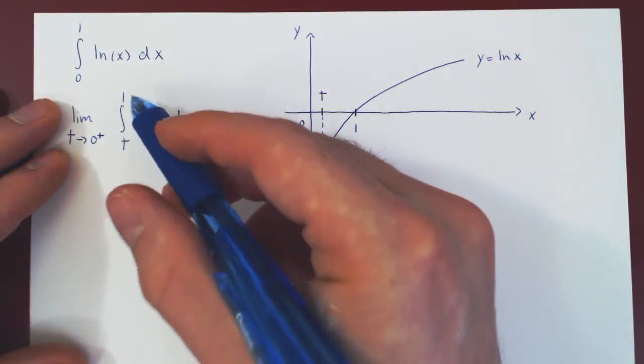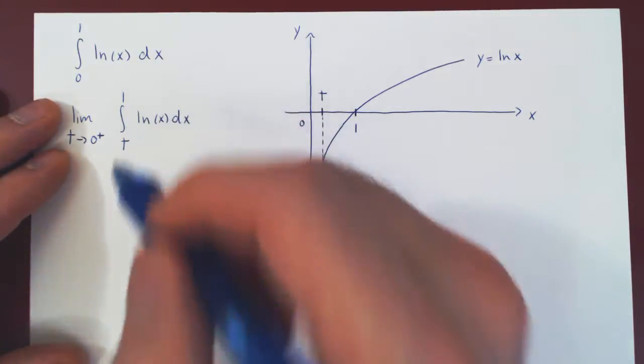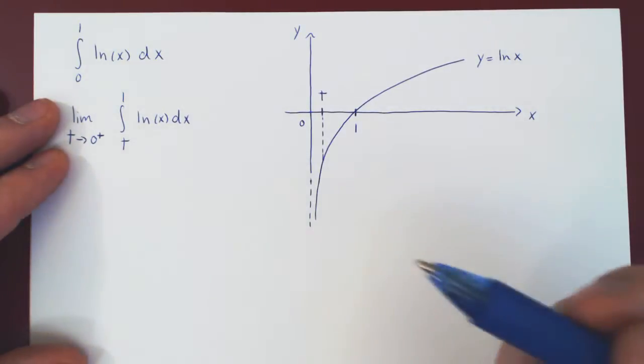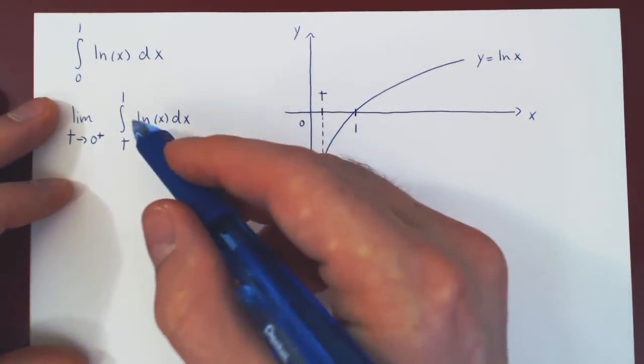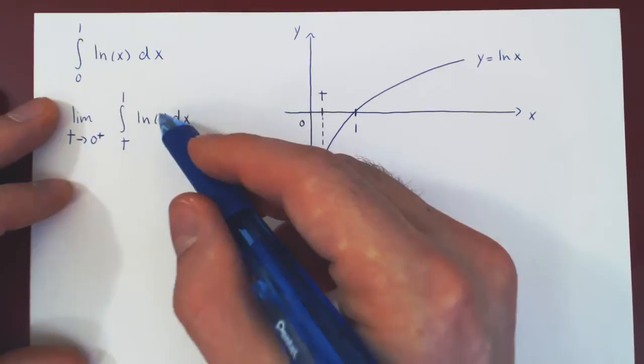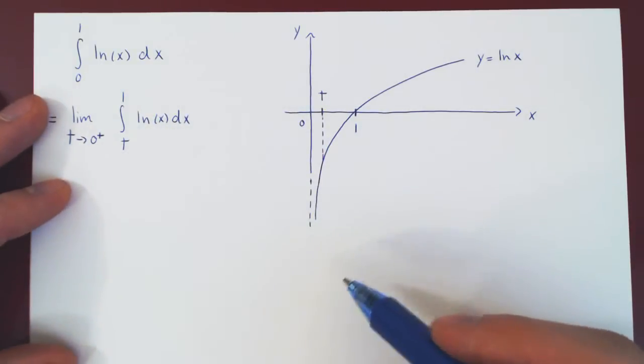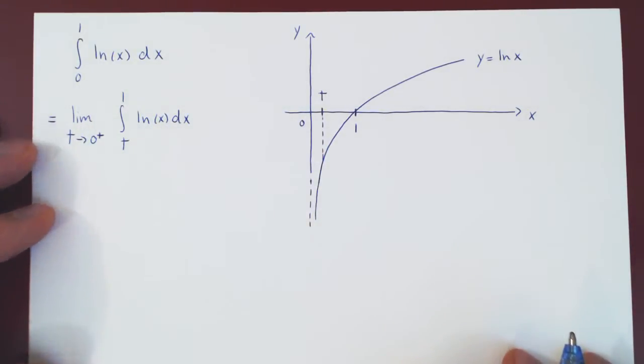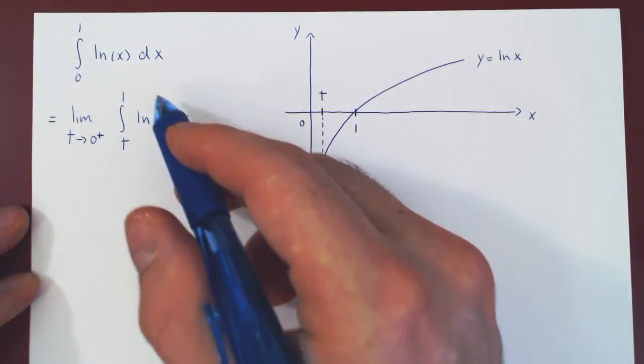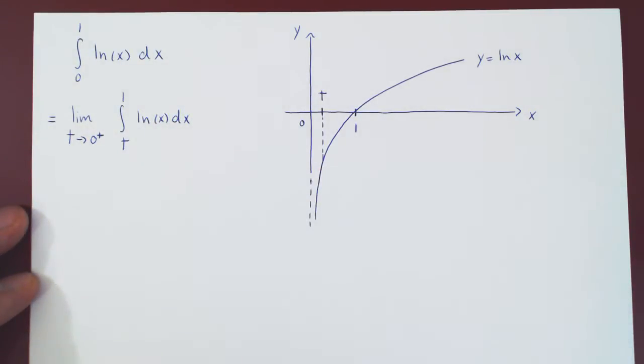So we will first evaluate our definite integral with the fundamental theorem of calculus, and then take the limit. As always, all we need is the antiderivative. So let us find first our antiderivative, and then we'll go back to the definite integral.